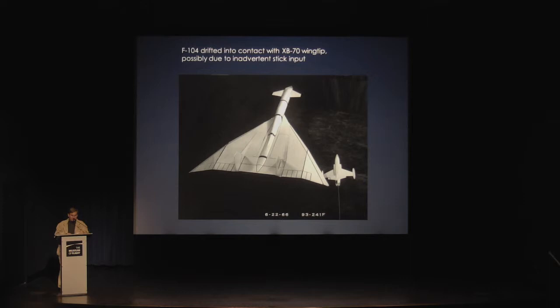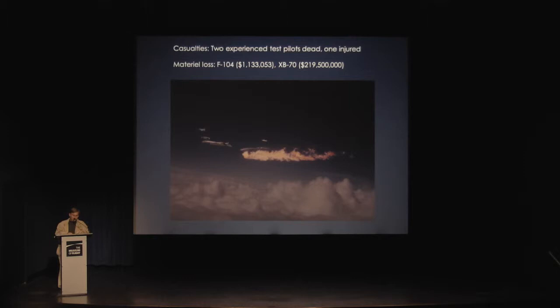The XB-70 command pilot and the F-4 pilot were not even present at the briefing but were later briefed by phone. The closest airplane to the XB-70 was a NASA F-104 just off the bomber's right wing. Three quarters of an hour into the photo session, the F-104 was caught in the bomber's wake vortex, possibly as a result of a slight inadvertent stick input. The F-104 drifted into contact with the XB-70's wing tip and rolled across the top of the bomber through its twin tails. The F-104 instantly disintegrated, killing NASA research pilot Joe Walker, while the XB-70 continued to fly straight and level for several seconds before rolling into a spin. XB-70 pilot Al White ejected using an escape capsule, but his co-pilot Carl Cross failed to do so.